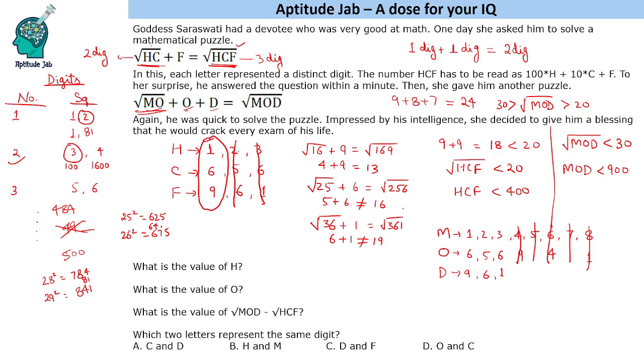Now first cannot be the answer because in this case it was just one digit added. Here we have to add two digits, so definitely it cannot be the answer. No need to check for that. Now let us talk about 256.